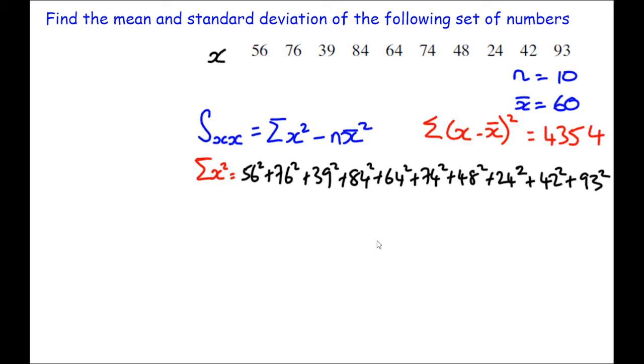And that leads to 40,354. Thinking back to the formula, I'm going to need this 40,354 minus 10 times the mean, which is 60 squared.